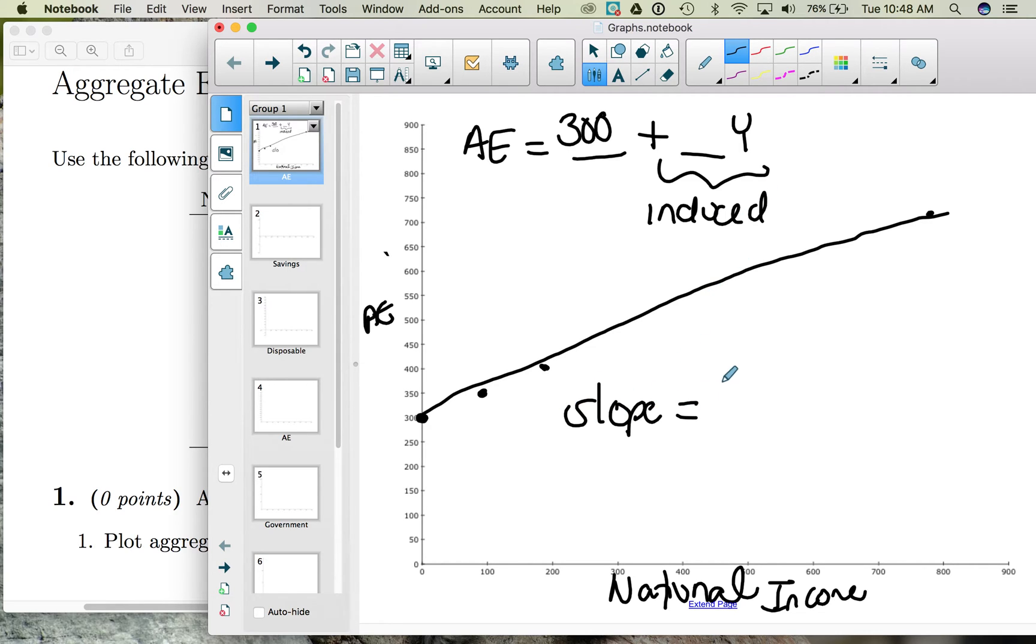So slope is equal to rise over run, which is the change in aggregate expenditures divided by the change in income. So notice we go from aggregate expenditures of 300 to aggregate expenditures of 700. So 700 minus 300, that's a change of 400.